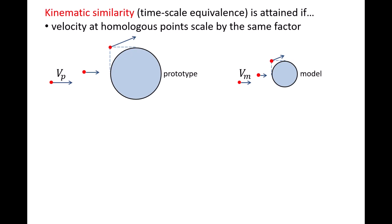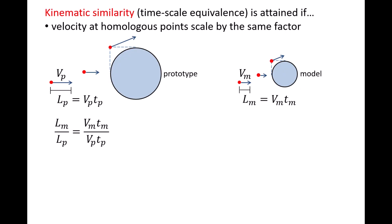Attaining kinematic similarity can be thought of as attaining timescale equivalence between the model and prototype. We can understand this better by looking at the relationship between speed and time for homologous points. The distance traveled by a fluid particle is equal to its speed multiplied by time. For the prototype, this is lp equals vp multiplied by tp. For the model, lm equals vm multiplied by tm. The ratio of lm to lp is vm times tm divided by vp times tp.